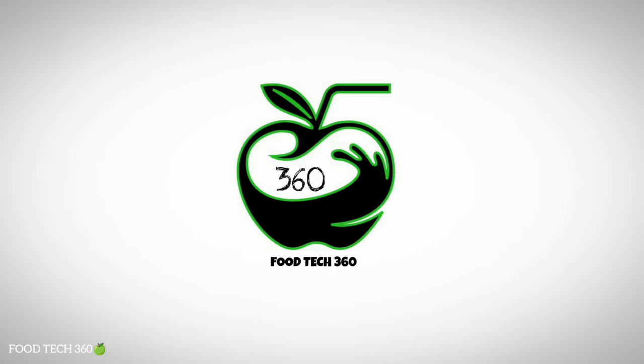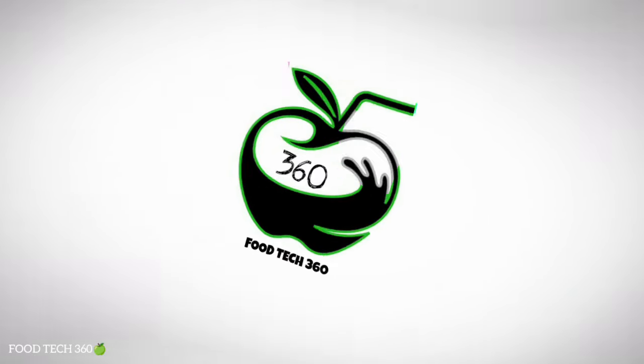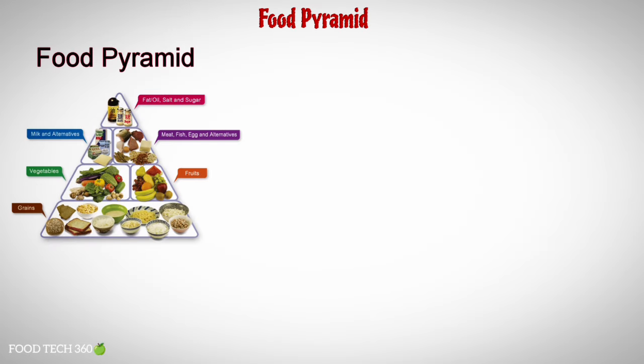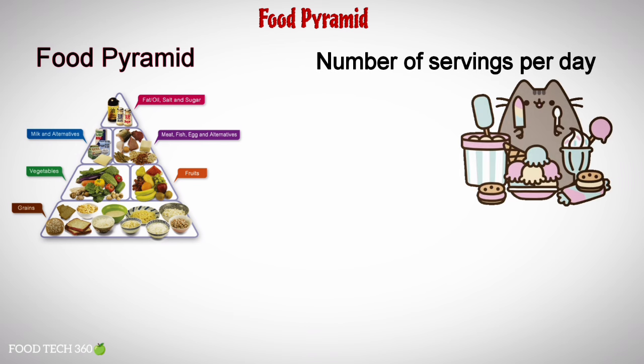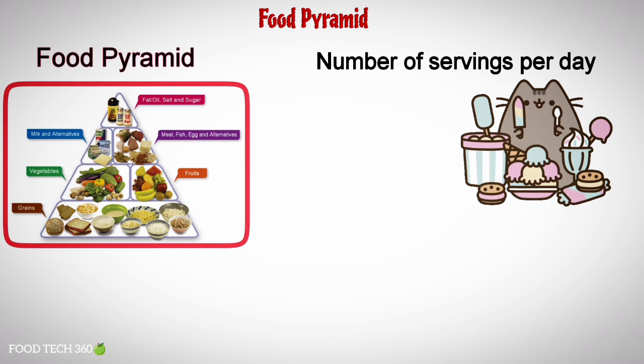Hello friends, welcome back to our channel Foodtech360. A food pyramid is a representation of the optimal number of servings to be eaten each day from each of the basic food groups.